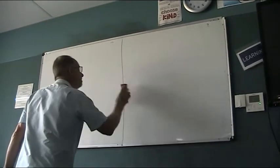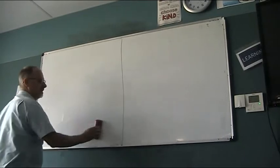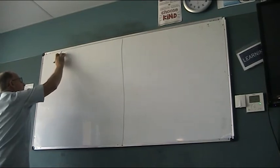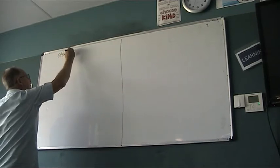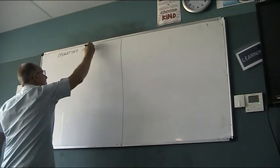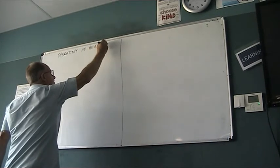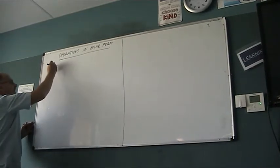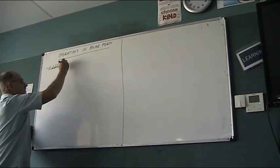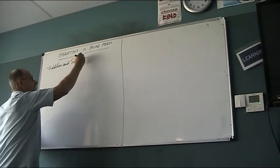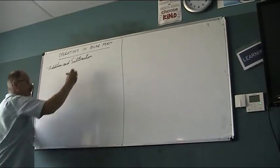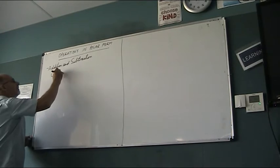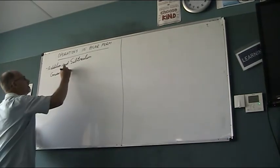So if we are in polar form, operations in polar form. So for addition and subtraction, what you need to do, we've got to convert back to rectangular form. So we need to convert to Cartesian or rectangular.